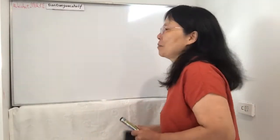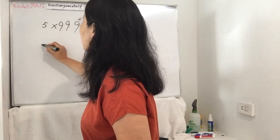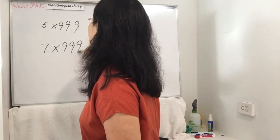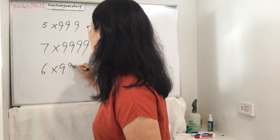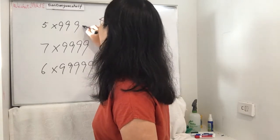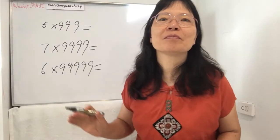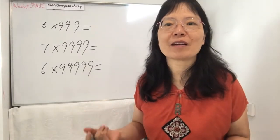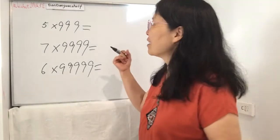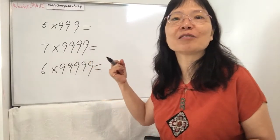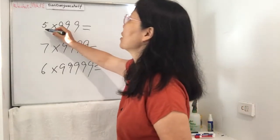Suppose I do 5 times 999, and 7 times... let's do 5 figure 9, and 6 times 5 figure 9. Before I said everything, every skill you want to master, you only need to practice. The more you practice, the more you become perfect. That's the rule. Because this 9 is really very special, you can do this way. Let's work out the answer together.